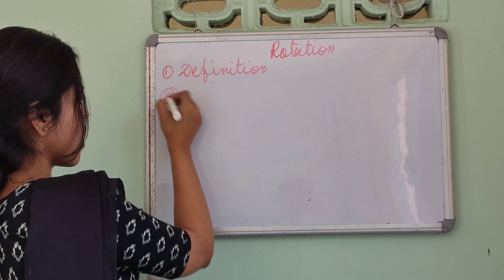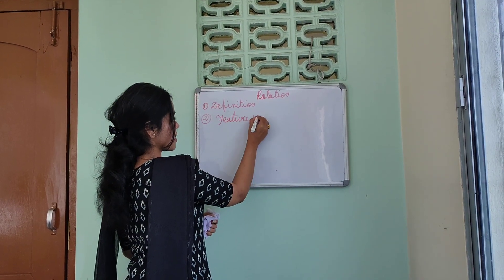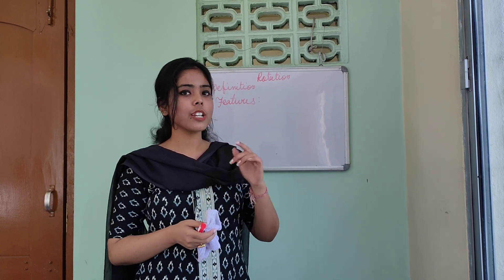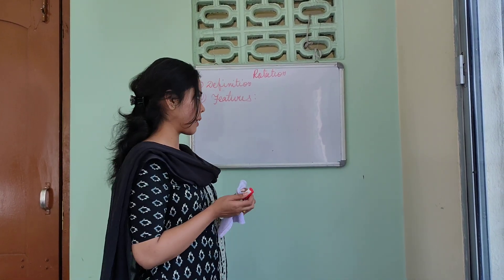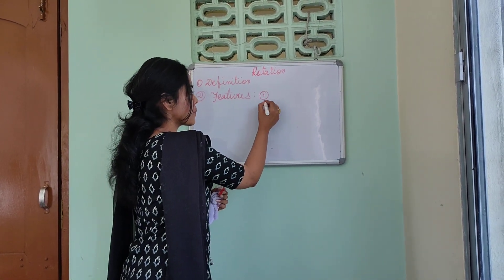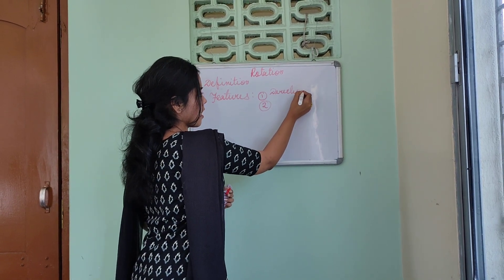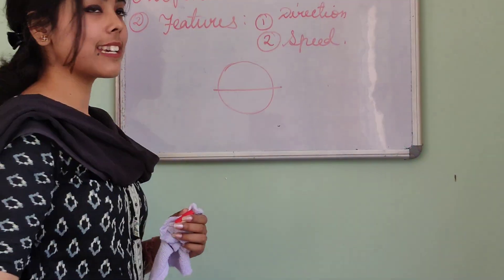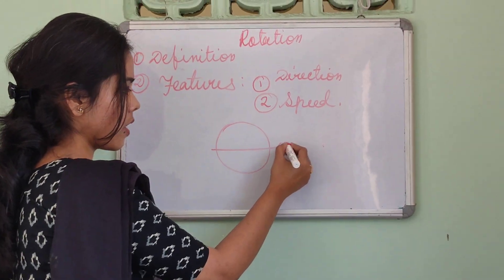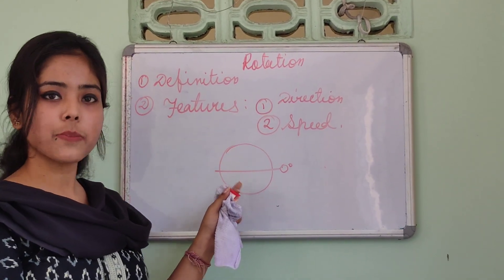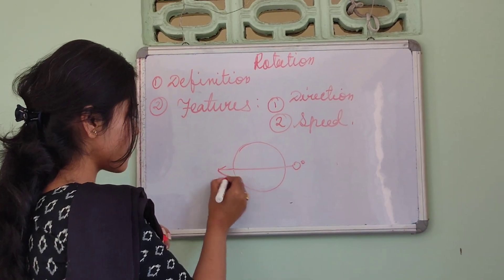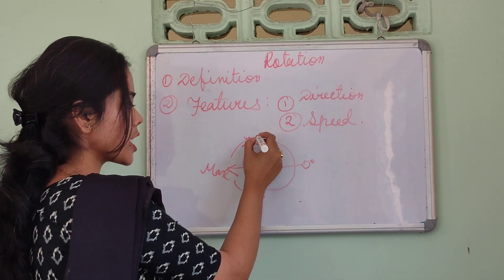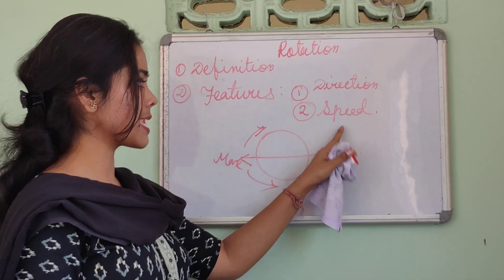The second point is the features or characteristics. First feature is direction — Earth rotates from west to east. Second is speed. At the middle of Earth's surface, there is a great circle, zero degrees, the equator. At the equator, Earth's rotation speed is maximum. When moving towards the northern or southern side, the rotational speed decreases.